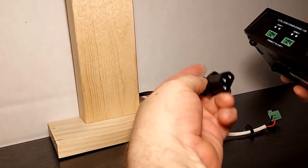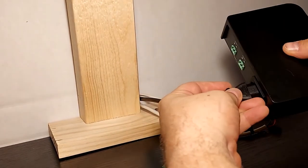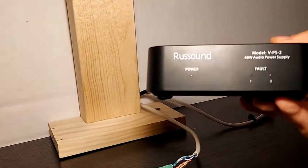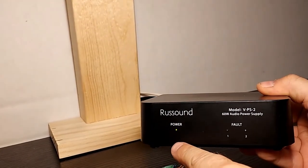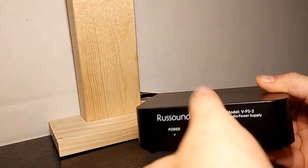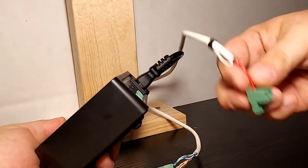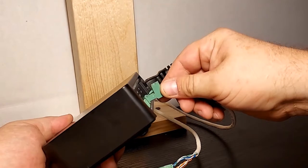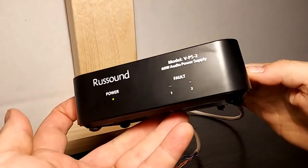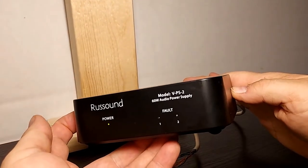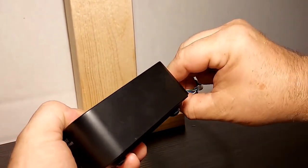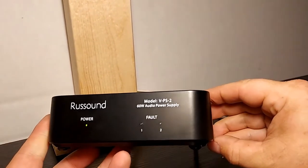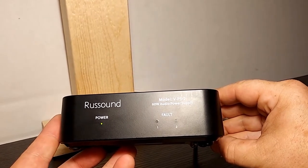So now we'll just insert the Phoenix terminals into the back of the power supply. Through the magic of editing, here's our power supply to the wall. I'm going to plug it in. You can see that the power indicator lights up green and the fault indicators are cleared. We don't have anything installed yet. Now let's install our keypads. No fault, and no fault there either. Our keypads should be powered up.